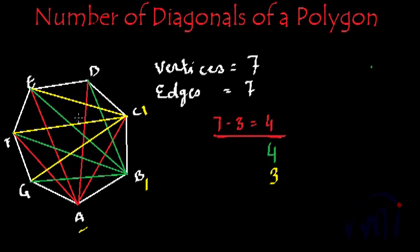So this time I am going to take blue color, and from point D I cannot draw a diagonal to C — adjacent neighbor. From D to B is already drawn in green color, and from D to A is already drawn in red color. So I can draw a diagonal from D to G, and D to F. D to E is also not possible because they are immediate neighbors — the line from D to E is actually the edge of the polygon. So we could draw 2 diagonals from point D.